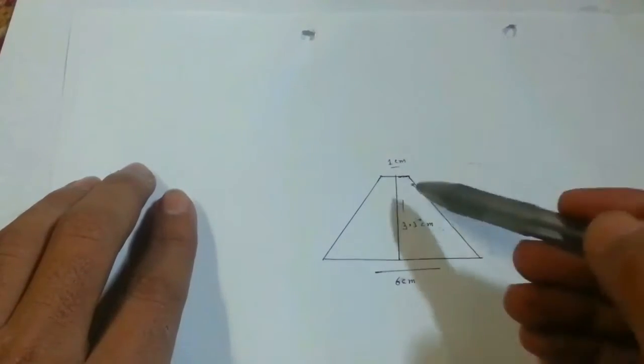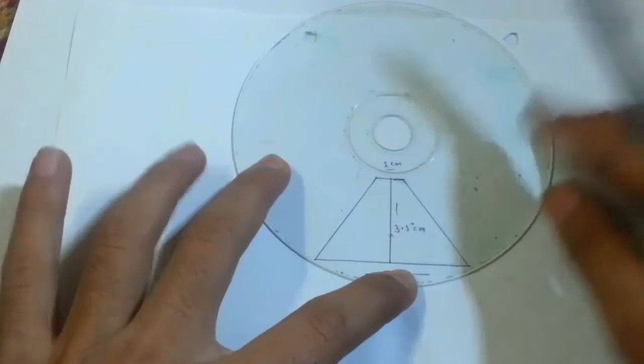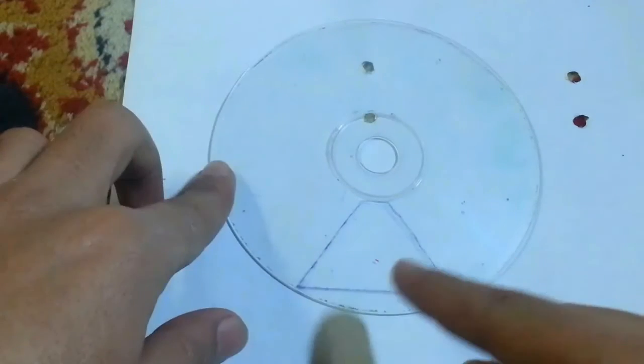Now put the CD on that shape and draw the shape on the CD with the help of a marker or pin. So now we got the shape on the CD. Now we have to cut it with the help of a red hot knife or a cutter.